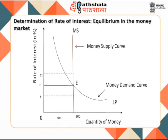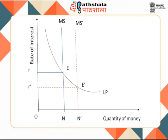There will be disequilibrium if the rate of interest is higher or lower than 10%. If money supply increases from ON to ON' (Figure 9.4), with initial equilibrium at OR rate of interest, there emerges excess supply of money. People react by buying bonds, causing bond prices to rise, which implies the rate of interest will decline. Thus, an increase in money supply leads to a fall in the rate of interest.